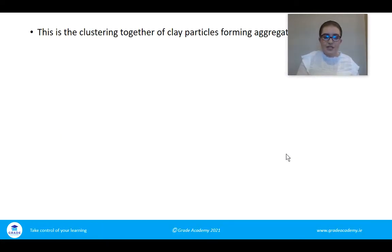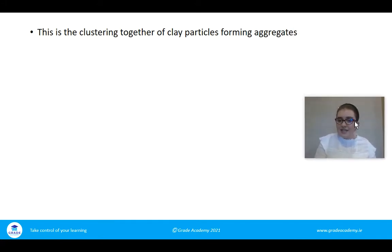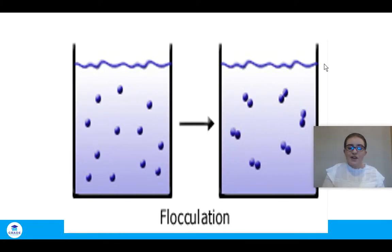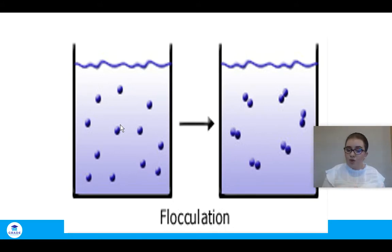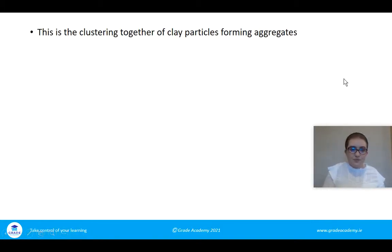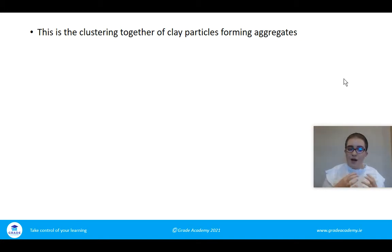The next topic is flocculation. Looking at that diagram, we have particles in two beakers — in one beaker you see individual clay particles on their own, whereas with flocculation the particles are in clumps stuck together. Flocculation is the clustering together of clay particles to form aggregates — an aggregate being a clump of sand, silt, and clay.